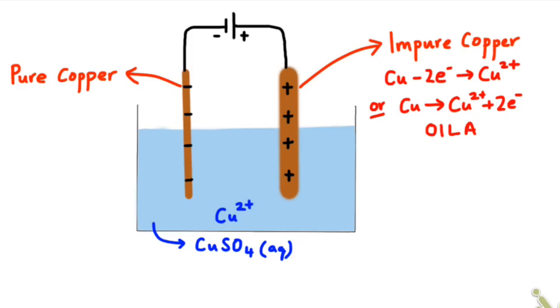I remember the mnemonic oil rig. Oxidation is loss. If we put an A on the end, oxidation is loss. It's a way of remembering that that happens at the anode. So this is an oxidation reaction because copper atoms are losing two electrons and the impure copper then makes up the anode.